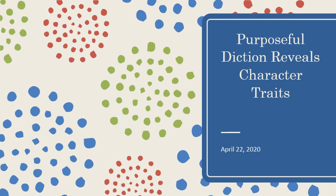Hey guys, happy Wednesday. Today we're going to be continuing our work on character. On Monday we talked about what characterization was, and especially how when we characterize somebody it's not just about describing what they look like, but really giving them action — having them move through their actions — so their actions can create who they are, rather than just telling the audience who they are.